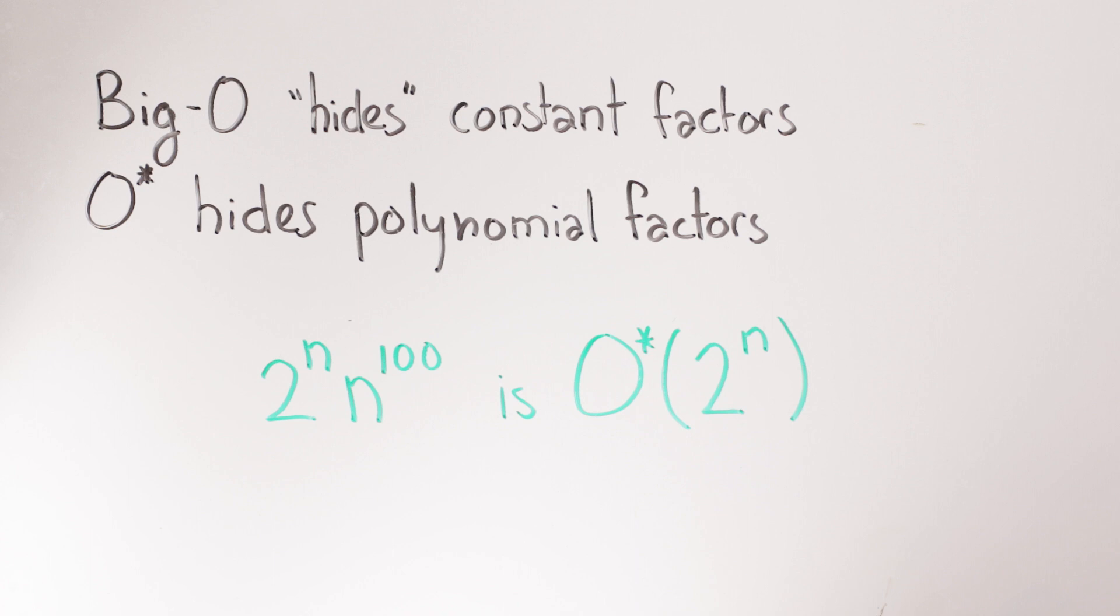The reason you might do that is that if you have something exponential like C to the n, then even for a normal big O, any improvement in C beats all polynomial factors. 1.9^n times n^100 is small o of 2^n.